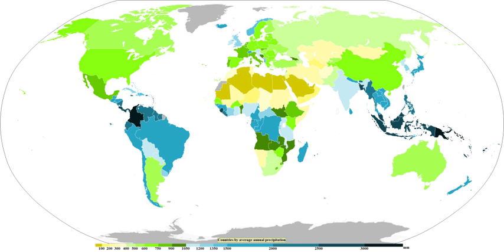The Köppen classification depends on average monthly values of temperature and precipitation. The most commonly used form has five primary types labeled A through E: A – tropical, B – dry, C – mild mid-latitude, D – cold mid-latitude, and E – polar.